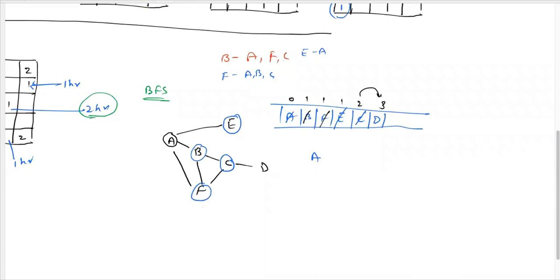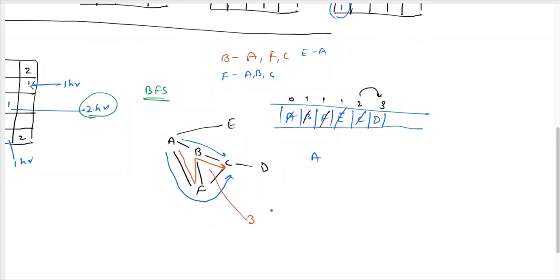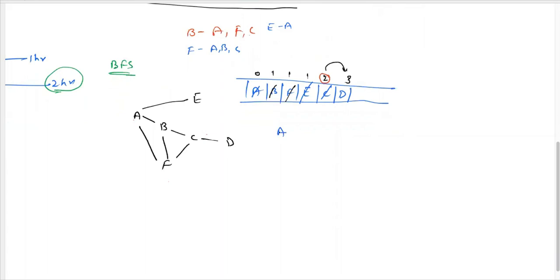Notice that you could reach C from A via a longer red path of three edges, but BFS gives the shortest distance of two. BFS performs level-order traversal: first nodes at distance 0 (A), then distance 1 (E, B, F), then distance 2 (C), then distance 3 (D). The longer paths are ignored because nodes are marked visited when first encountered at minimum distance.